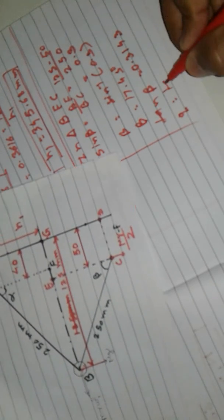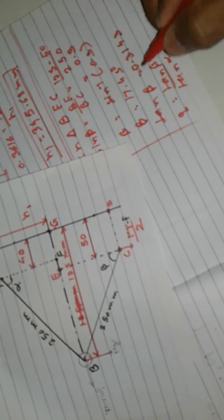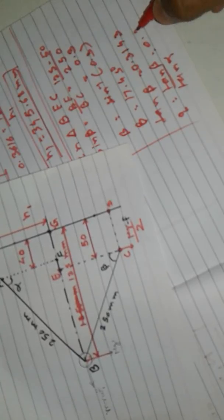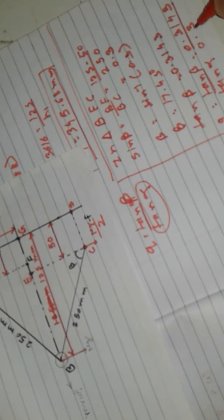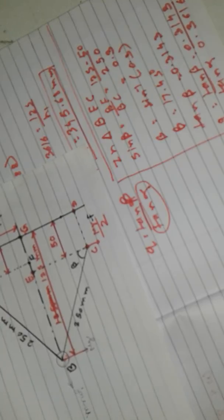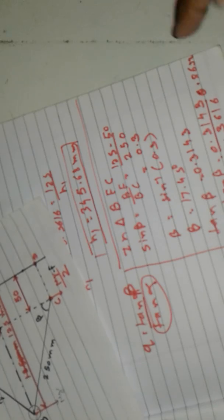tan beta = 0.3143. So q = tan beta / tan alpha = 0.3143 / 0.3616 = 0.8692. This is the value of q.